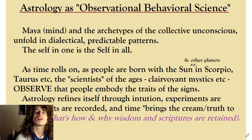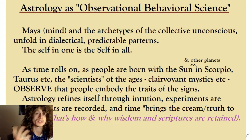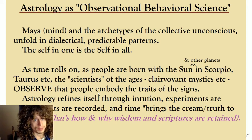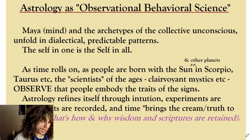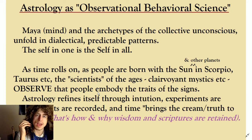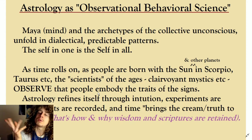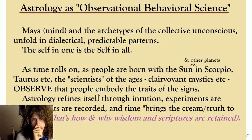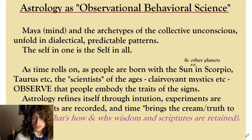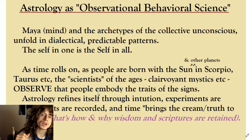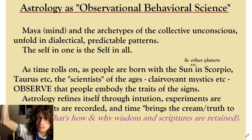Maya, mind, and the archetypes of the collective unconscious that we know as the zodiac unfold in dialectical, predictable patterns. That is the zodiac — the self in one is the self in all. As astrology came to be an observational behavioral science thousands of years ago, clairvoyance had the sense of these metaphysical precepts of astrology. As time rolled on, people would be born with the sun or with other planets in this sign or that sign — Scorpio, Taurus, whatever. The behavioral scientists of the ages, these clairvoyant mystics, would observe that people embody the traits of a certain type, a certain psychological archetype, when a person is born with the sun being in the sky at that place.